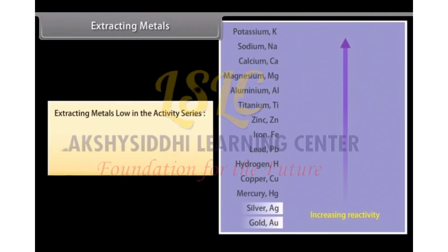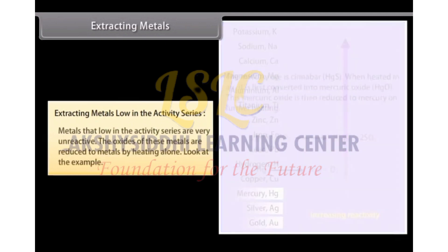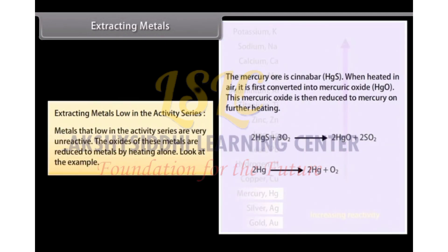Extracting metals low in the activity series: Metals that low in the activity series are very unreactive. The oxides of these metals are reduced to metals by heating alone.